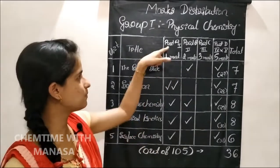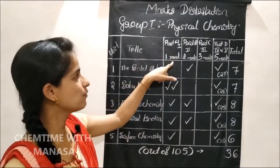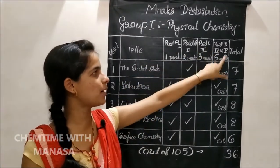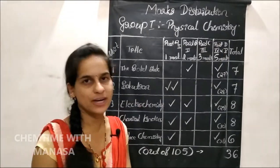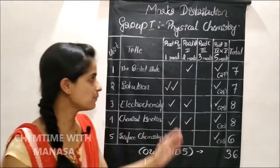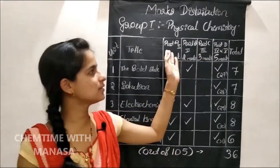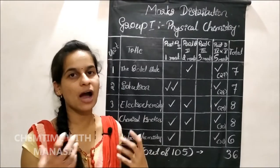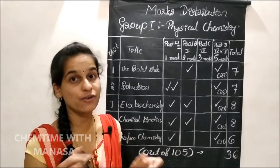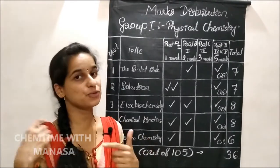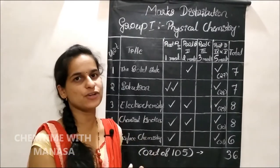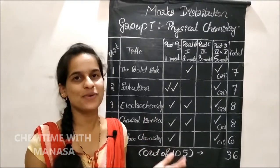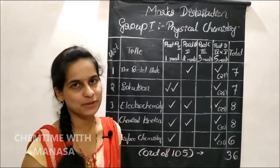Your question paper has Part A for 1 mark, Part B for 2 marks, Part C for 3 marks, and Part D for 5 marks — totally 4 parts in your question paper. If you have any doubts about the pattern of your question paper, please watch my previous video in which I have explained the pattern of your question paper.